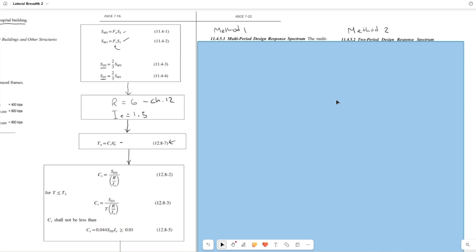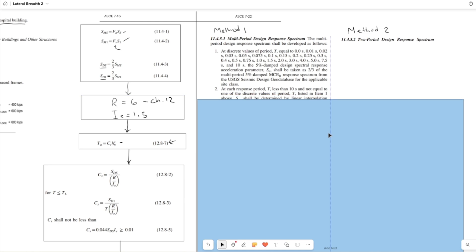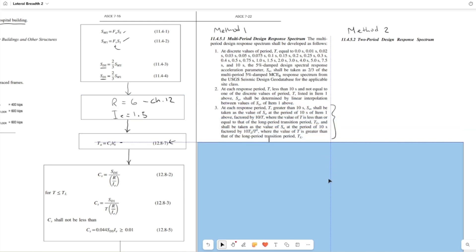The new method, the multi-period design response spectrum, is very wordy. But essentially, to make your new response spectrum, you have three steps. The first step: they give you discrete periods that you need to find your spectral acceleration for using the USGS database. This is pretty straightforward. You can just pull it from the website at each one of these seconds, put it into Excel or something similar.